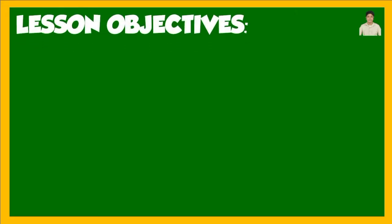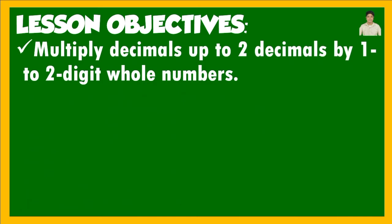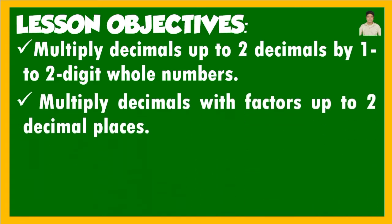Let us start our discussion by enumerating the lesson objectives. At the end of this video lesson, pupils, you are expected to multiply decimals up to two decimal places by one to two digit whole numbers — that means we will be multiplying decimal numbers by whole numbers — and also we will be multiplying decimals with factors up to two decimal places, so decimal by whole number and also decimal by another decimal.